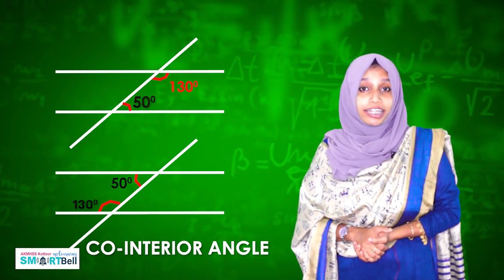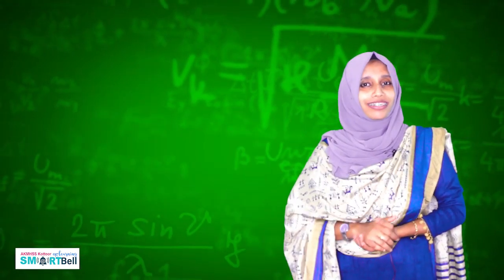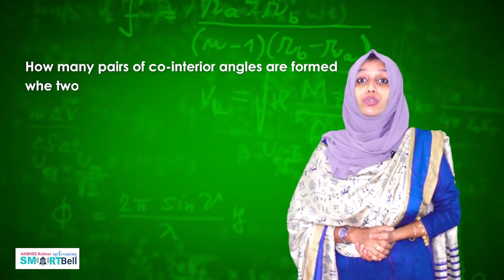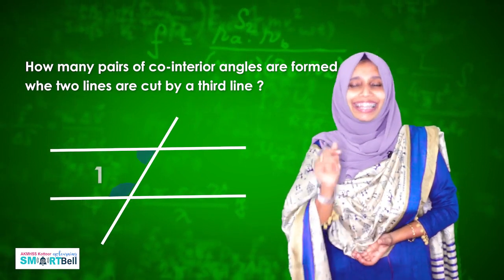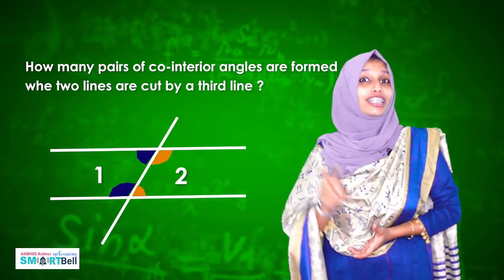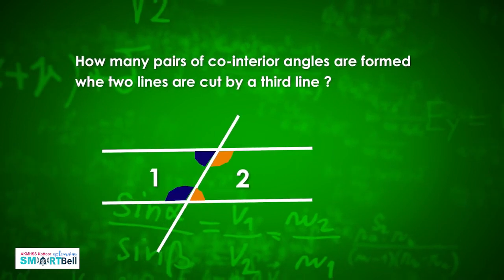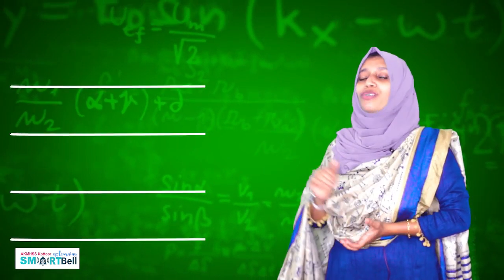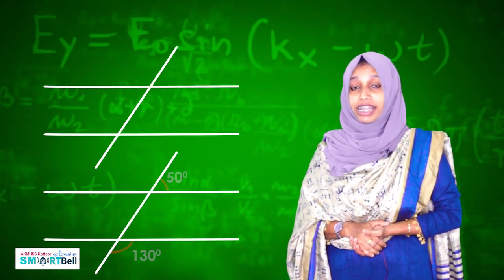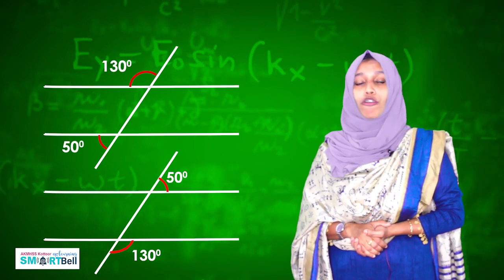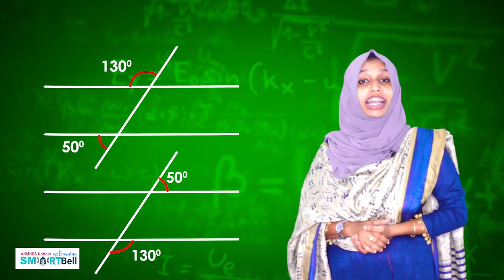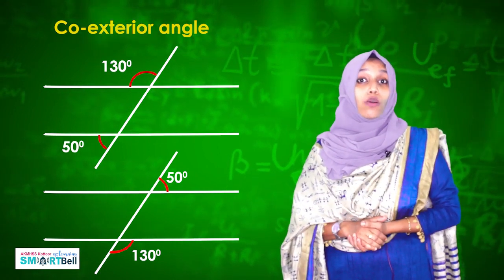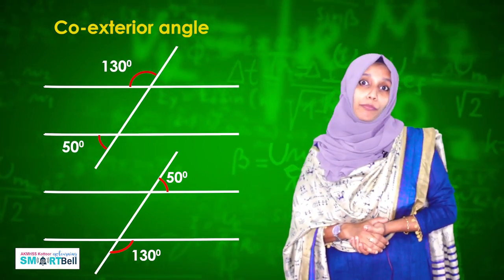What are co-interior angles? How many pairs of co-interior angles are formed when two lines are cut by a third line? The answer is two. When two lines are crossed by a transversal, the angles on the same side of the transversal and on the outer side of the parallel lines are called co-exterior angles. The sum of co-exterior angles is also 180 degrees — that means supplementary.